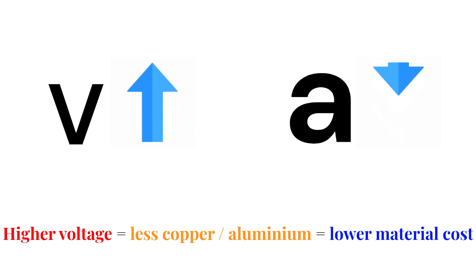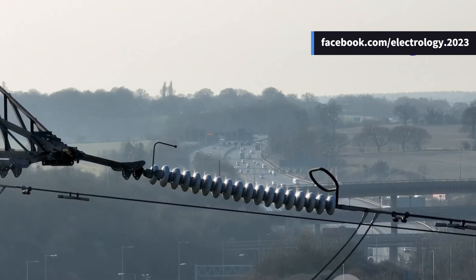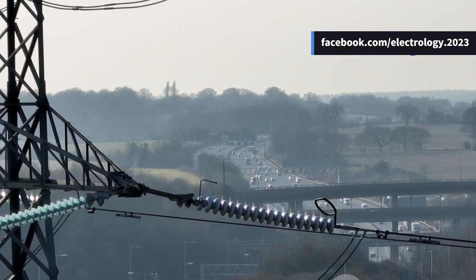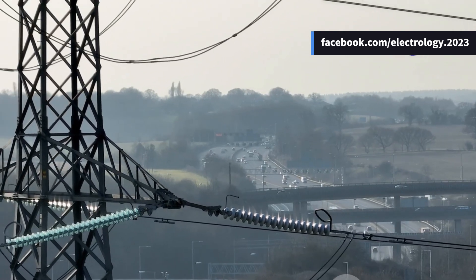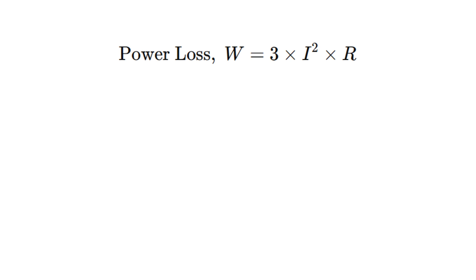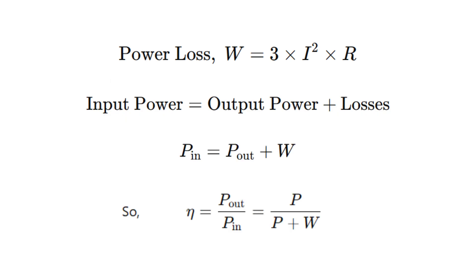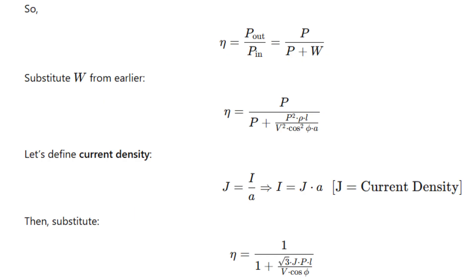Secondly, high voltage increases transmission efficiency. Here's why: when we transmit power, some of it is lost as heat in the conductors. These losses are directly proportional to the square of the current, and current goes down when voltage goes up. Now input power equals output power plus total losses. Substituting values again, we arrive at the expression efficiency equals output power divided by input power, that simplifies to 1 divided by 1 plus root 3 JPL divided by V cos phi, where J is current density. As you can see, if you increase the line voltage V, the denominator becomes smaller, so overall efficiency increases. So again, higher voltage leads to better efficiency in power delivery.